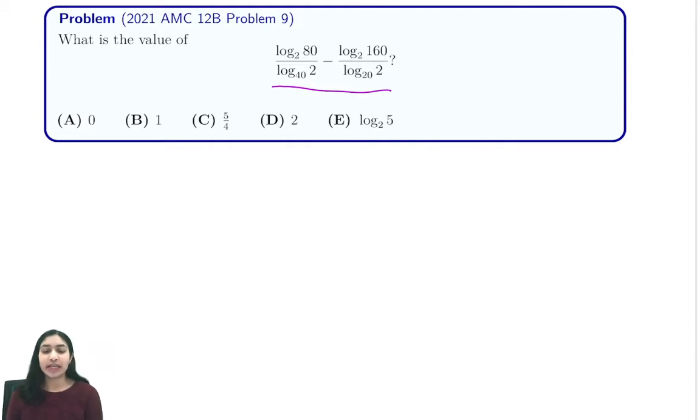So what we want to do in this case is rewrite our expression somehow so it's something that we can calculate more easily. So let's start off by looking at this first term, log base 2 of 80 over log base 40 of 2.